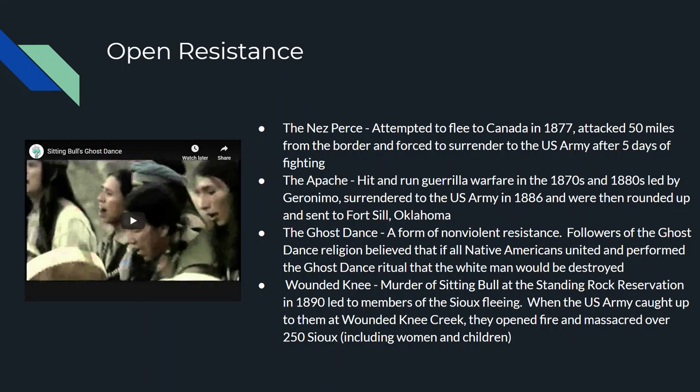Eventually there was open resistance. The Nez Perce are one of the most famous resistance groups. In 1877 they tried to flee to Canada, leaving from Wyoming and Montana, traveling northwest through Idaho — getting within 50 miles of the Canadian border. The U.S. Army was chasing them the entire time, and when it finally caught up to them 50 miles from the border, a five-day battle ensued. The U.S. Army eventually defeated the Nez Perce, who were forced to march back to Wyoming to a reservation.